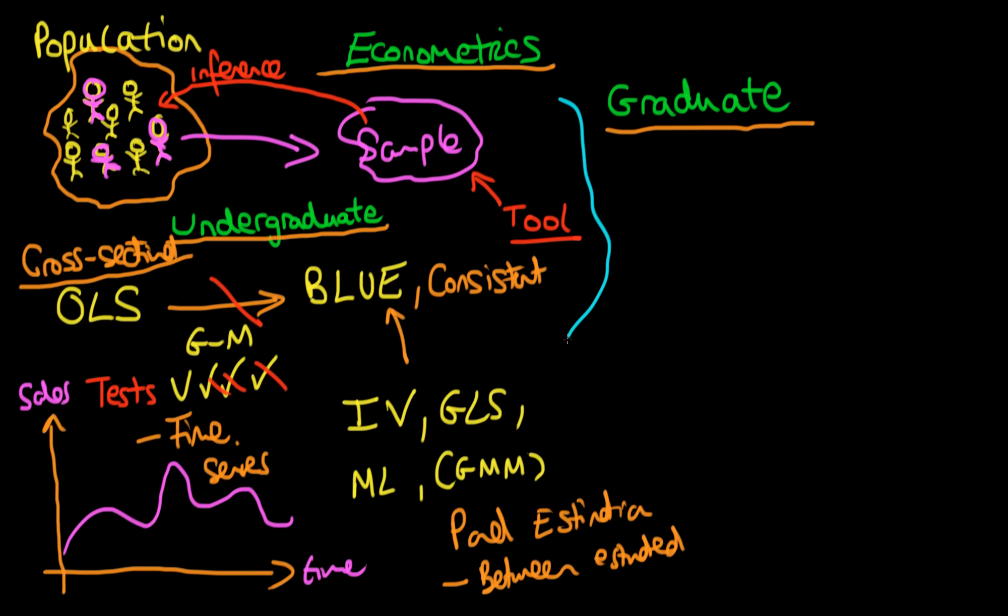The graduate course is going to be quite similar to the undergraduate course. But one fundamental difference is that it's going to use matrix algebra. Whereas in the undergraduate course there will be absolutely no matrices if I can help it. But when you get to the graduate level linear algebra becomes the best way to summarize econometrics. We're going to introduce that to begin with with the graduate course.